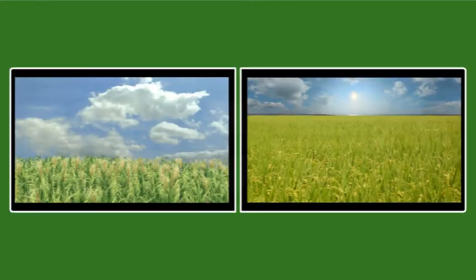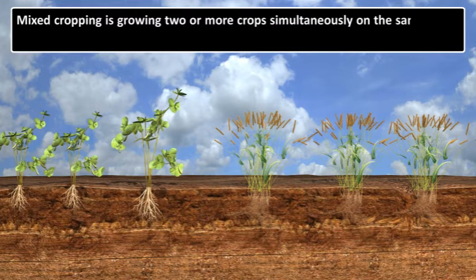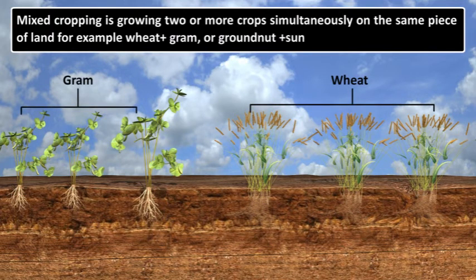There are different ways of growing crops to get maximum benefit. Mixed cropping is growing two or more crops simultaneously on the same piece of land. For example, wheat plus gram or groundnut plus sunflower. This reduces the risk and gives some insurance against the failure of one of the crops.